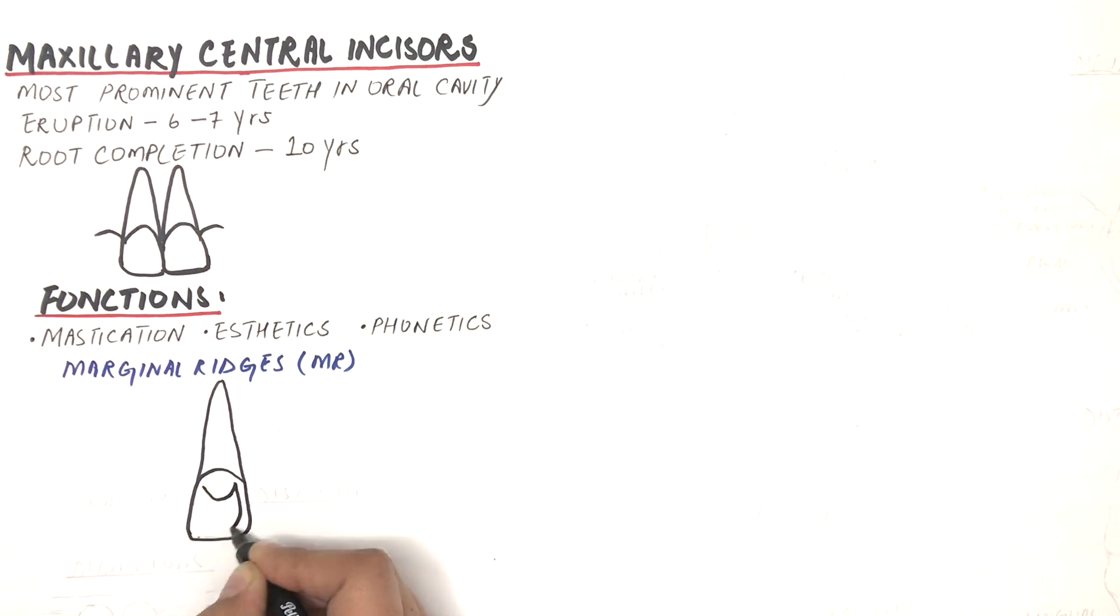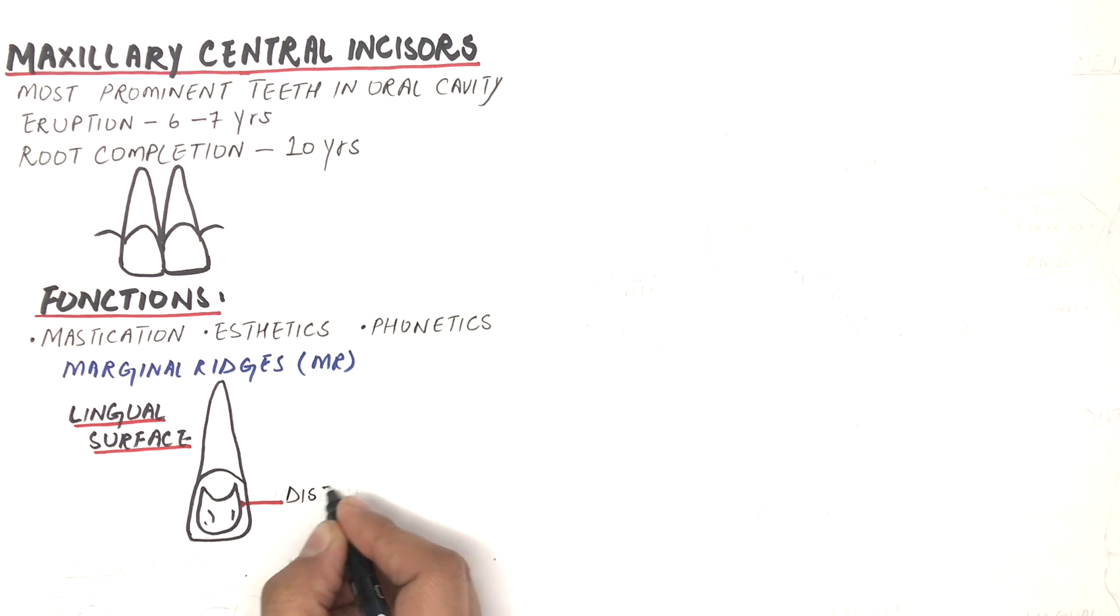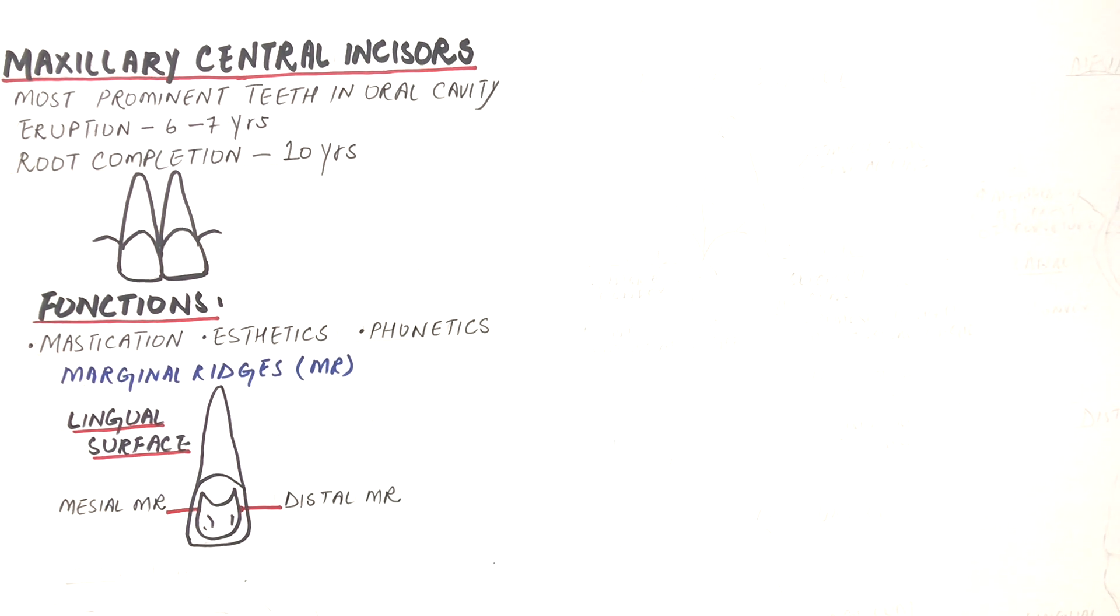The marginal ridges of a central incisor are the mesial and distal elevations of the lingual surface of the tooth and are parallel to the long axis of the tooth. However, marginal ridges on posterior teeth are present on their occlusal surfaces.